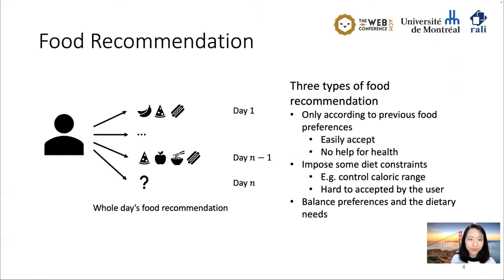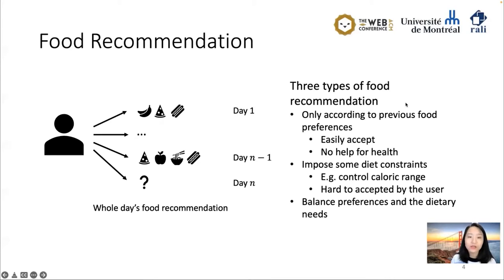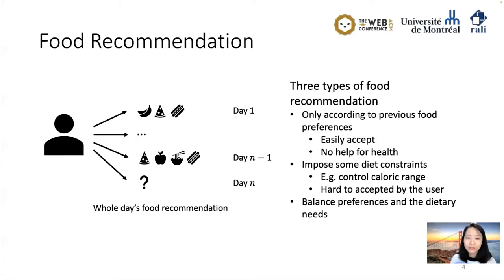Food recommendation is a very popular research and industrial topic because it has a high potential impact on human's physical health. There are three types of food recommendation. The first only considers the user's previous food preferences — it may be accepted by the user, but it's not helpful for health. The second tries to impose dietary constraints, like controlling caloric range, which is healthy but hard for users to accept. The third type tries to balance user preferences with dietary needs, and our research falls into this category.